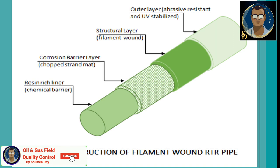As you can see in the picture, non-metallic pipes are made with different layers. The core layer or carrier layer — which carries the liquid or gas — is a resin-rich liner acting as a chemical barrier. Immediately outside is the corrosion barrier layer made of chopped strand mat. The third is the structural layer, which holds the form of the pipe and is filament wound. The outer layer protects from abrasion and has chemical additives to protect against ultraviolet rays from the sun.